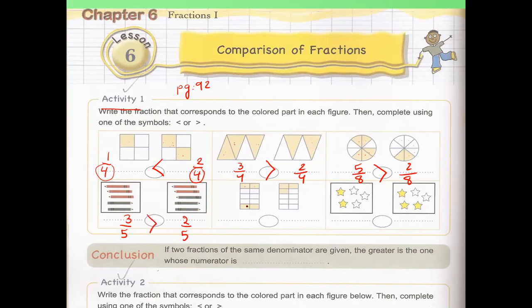Here, how many parts did we color? Four out of ten total parts. And here, we colored three out of ten. In which figure did we color more? In the first one. So four over ten is bigger than three over ten.